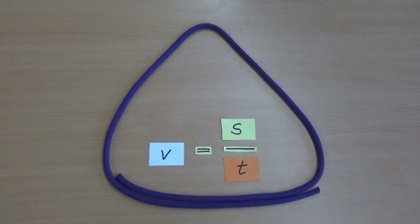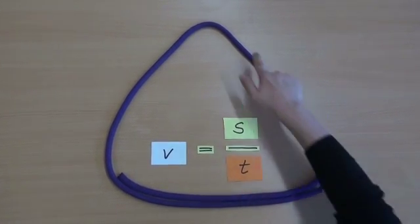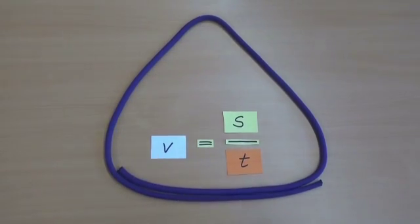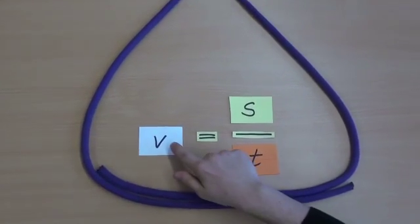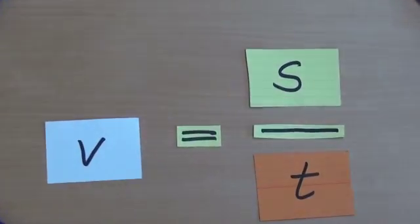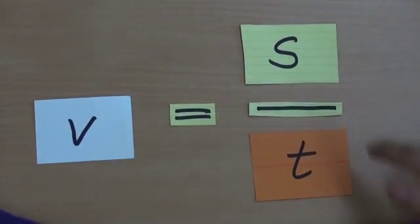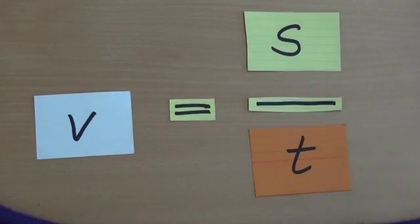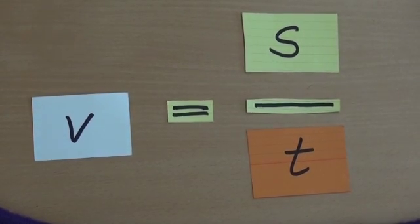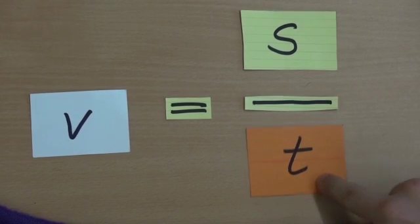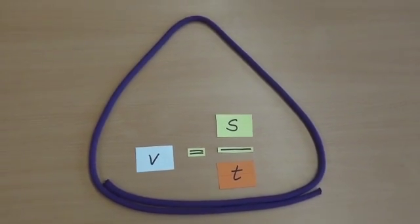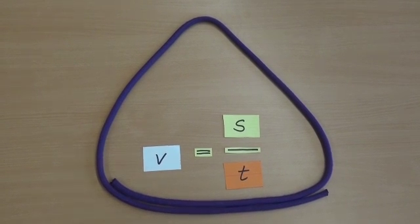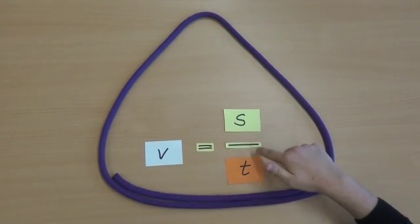Look at this triangle. In this triangle you see the formula of velocity v. v symbolizes the velocity, s symbolizes the distance, and t symbolizes the time. So you see, velocity is the distance divided by the time.